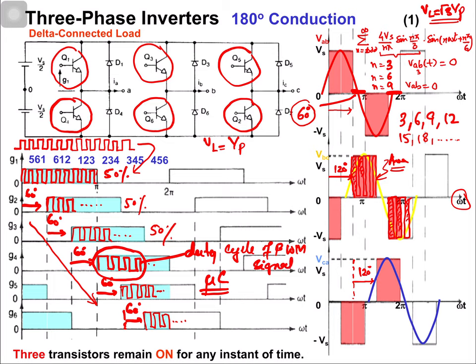By changing the PWM duty cycle you can change the output voltage — either the line voltage or the phase voltage. This is valid for wye connected, delta connected, or any configuration. With a single PWM signal ANDed with all gate pulses, you get the controlled voltage at the output. Now let's discuss the behavior of the freewheeling diode.